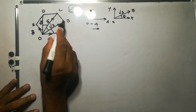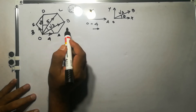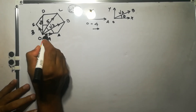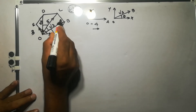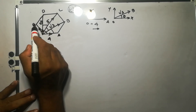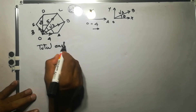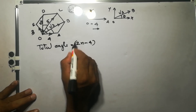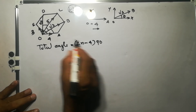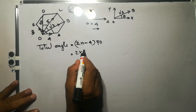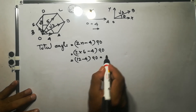To find out this total angle, we use the formula: sum of all interior angles equals (2N − 4) × 90°. Here we have 6 corners, so the total angle equals (2×6 − 4) × 90 = (12 − 4) × 90 = 720°. Therefore, the sum of all six angles A, B, C, D, E, and O equals 720°.